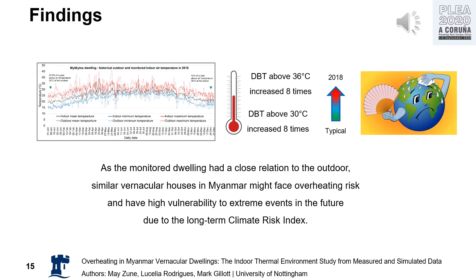As a summary, outdoor dry-bulb temperature above 36 degrees Celsius has increased by a factor of nine in 2018 compared to the typical weather year. As the monitored dwelling has a close relationship to outdoor conditions, similar vernacular houses in Myanmar might face overheating risks and have very high vulnerability to extreme heat events in the future because of long-term climate risks.